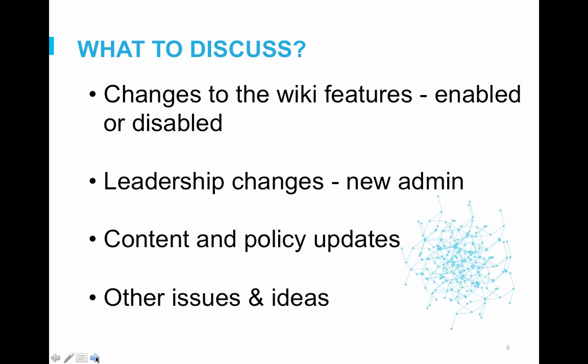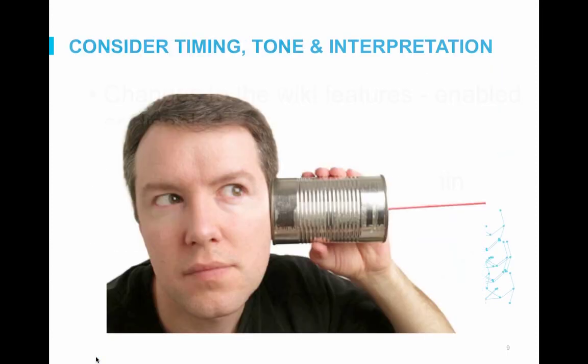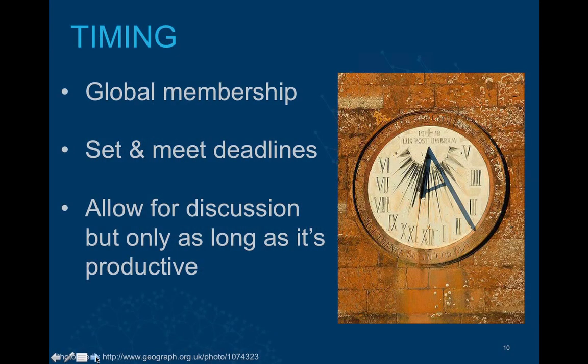You can always discuss something you aren't sure of or want a second opinion about. It doesn't have to be a big thing to start a conversation. The most important things to consider when you're participating in a discussion are the timing, the tone, and your interpretation of what's going on. You want to be sure you're thinking of the big picture and keeping what's best for the wiki in mind. There are a few parts to timing: when to have a conversation, how long to continue it, and how often to weigh in.